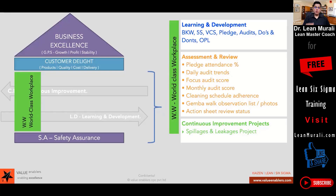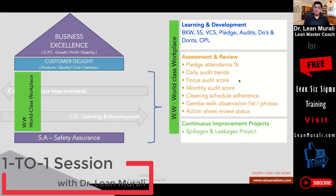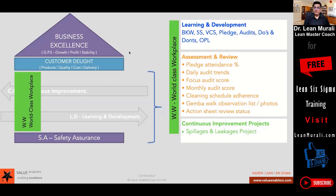You need to be very clear to craft this for your organization so that it reaches people at the value-added level — the workman who actually works on the machine. Without assessment and review, people will go back to what is comfortable and convenient, and the system will collapse. For assessment and review, monitor whether the pledge is taken, track daily audit trends, conduct focused audits, check cleaning schedule adherence, and use gemba walk observation lists.